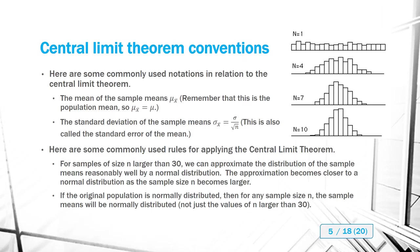When we apply the central limit theorem, there are some commonly used rules. The first is: for samples of size n larger than 30, we can approximate the distribution of the sample means reasonably well by a normal distribution. This first rule basically applies to distributions that are not normal to begin with. If the sample size is larger than 30, we can reasonably approximate the data with the normal distribution, because as n becomes larger, that approximation becomes less of an approximation and more of an actual fact.